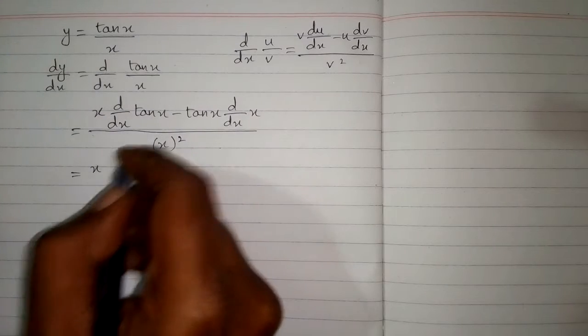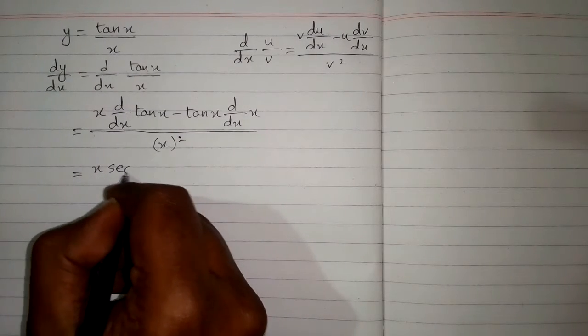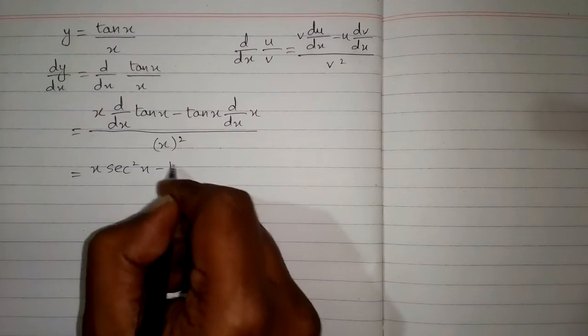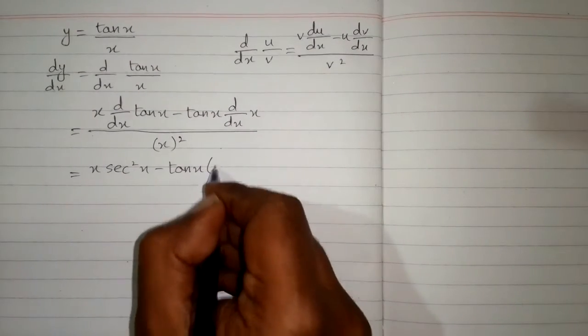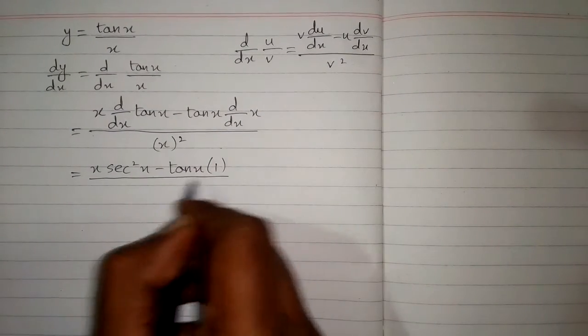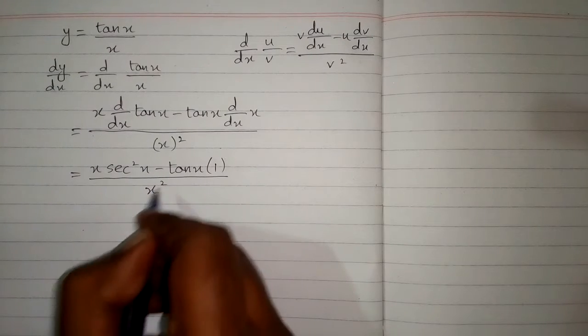Now the derivative of tan x is sec square x and the derivative of x is 1 and the square of x is x square.